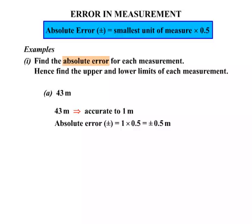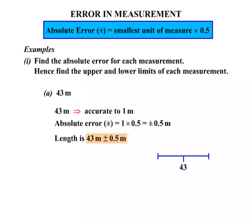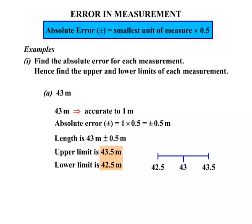Now we need to find the upper and lower limits for 43 metres. The length is 43 metres plus or minus the absolute error of 0.5 metres. Adding 0.5 gives an upper limit of 43.5 metres; subtracting 0.5 gives a lower limit of 42.5 metres. So 43 metres, accurate to 1 metre, lies between 42.5 metres and 43.5 metres.